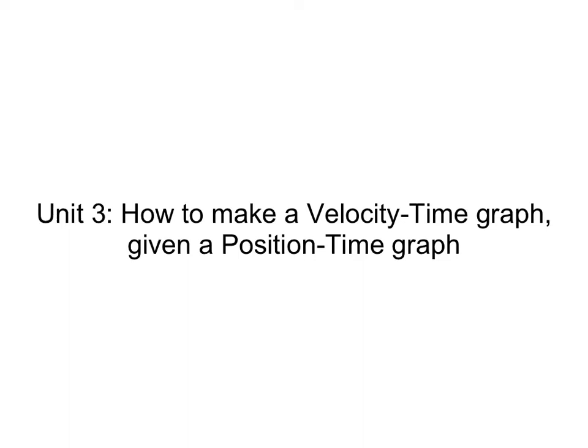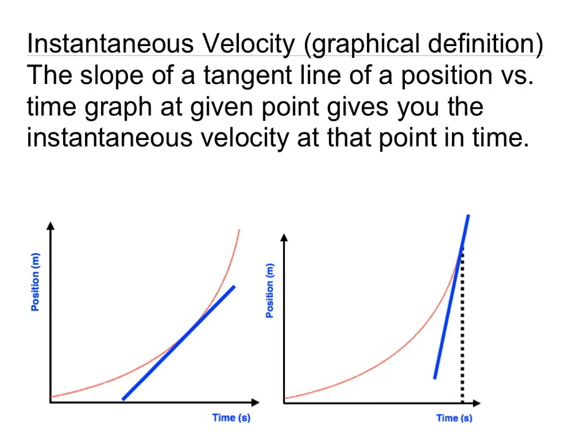Today we're going to be talking about how to make a velocity-time graph when you're given a position-time graph. The first thing we need to do is recall the graphical definition of instantaneous velocity: the slope of a tangent line of a position versus time graph at a given point in time gives you the instantaneous velocity at that point in time.